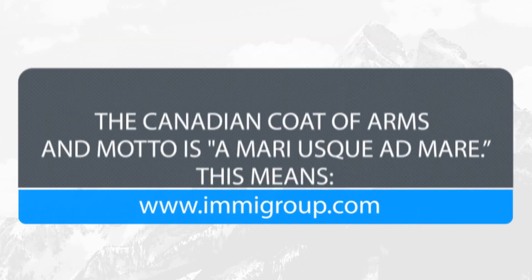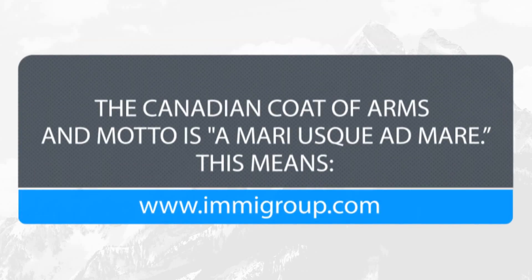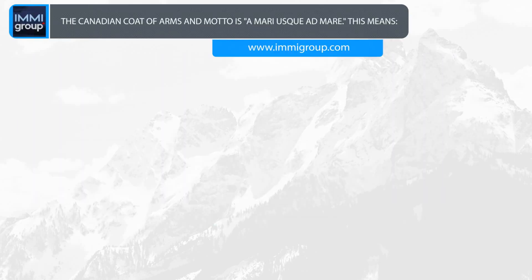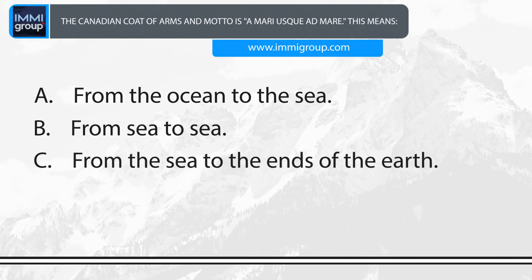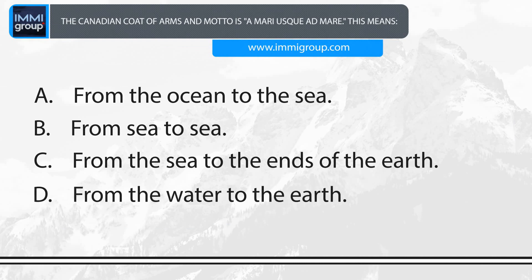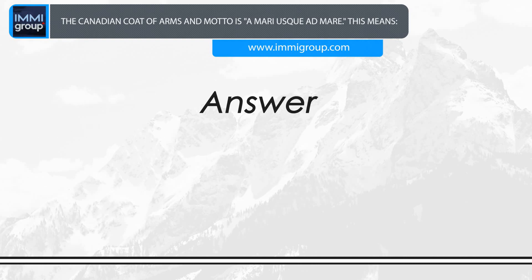The Canadian Coat of Arms motto is 'A mari usque ad mare.' This means: A. From the ocean to the sea. B. From sea to sea. C. From the sea to the ends of the earth. D. From the water to the earth. Answer: From sea to sea.